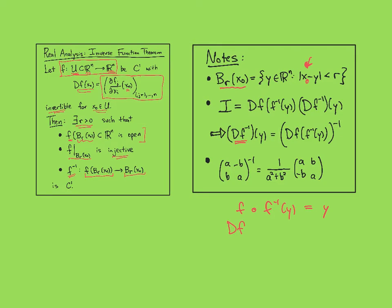So df, which would be evaluated at f inverse of y, times the derivative matrix of f inverse evaluated at y, will give me the identity matrix. And then since this matrix will be invertible, I can solve for the derivative matrix of f inverse at y.